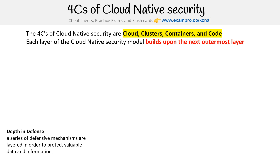The four C's is a framework or mental model to think about cloud native security, but it really is the general idea of defense in depth, which you might see when looking at the security of data centers. It is a series of defensive mechanisms that are layered in order to protect valuable data and information.